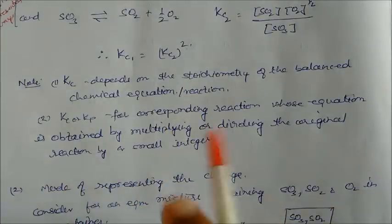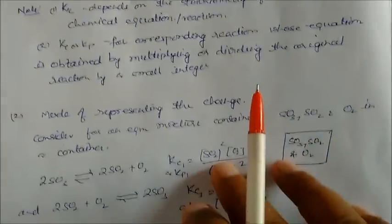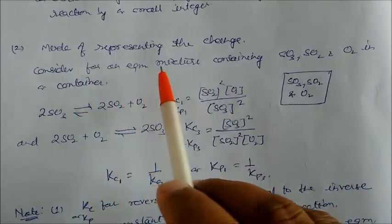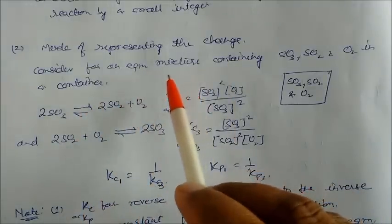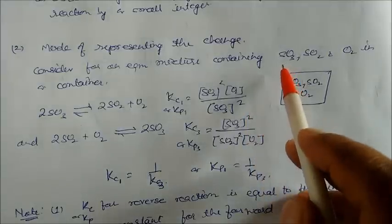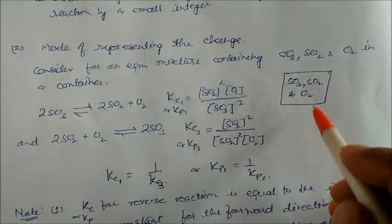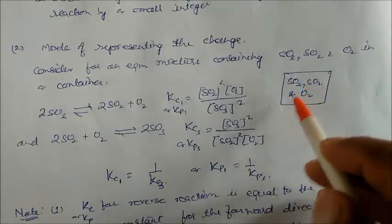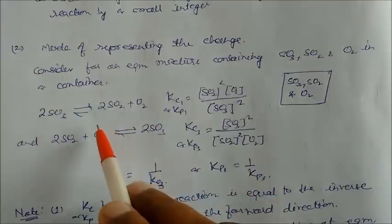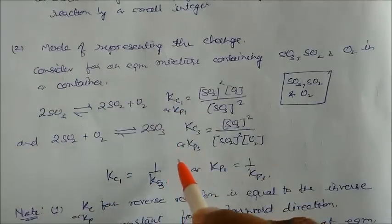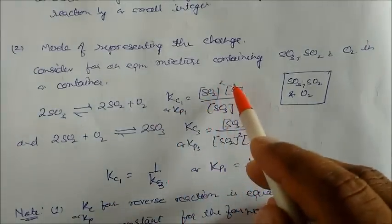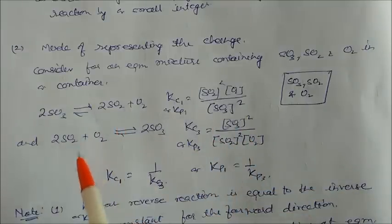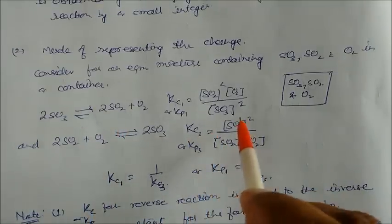The second factor is the mode of representing the reaction. Consider an equilibrium mixture in a container with SO3, SO2, and oxygen — three gases under equilibrium. We can write Kc1 or Kp1 for the forward reaction. For the reverse reaction, Kc3 will be different.